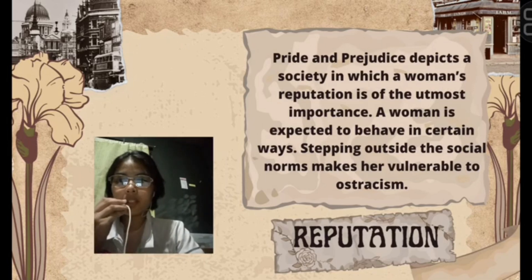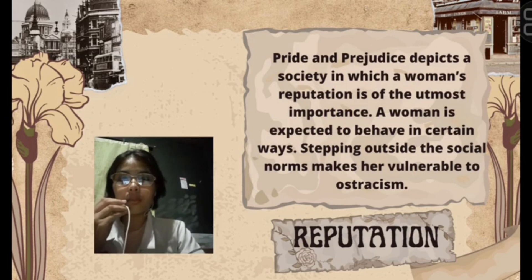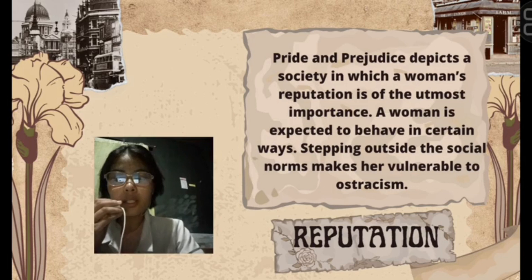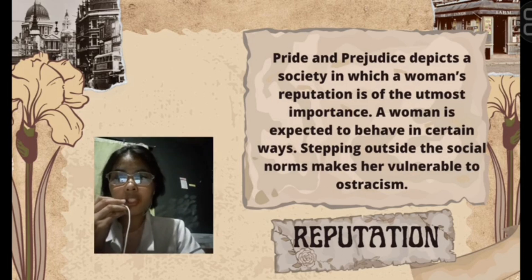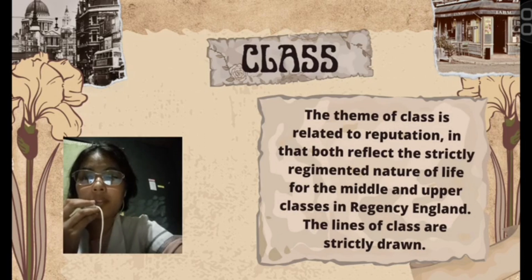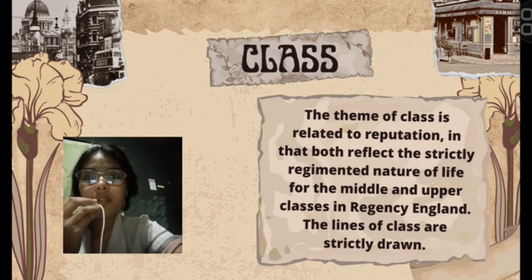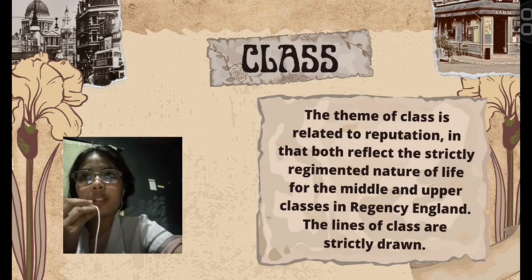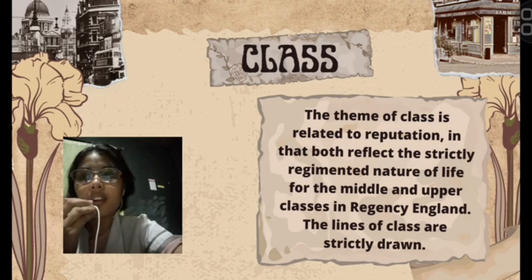For the next theme, reputation — Pride and Prejudice depicts a society in which a woman's reputation is of the utmost importance. A woman is expected to behave in certain ways, and stepping outside social norms makes her vulnerable to ostracism, meaning deliberately exclusionary treatment. For the next theme, class — the theme of class is related to reputation in that both reflect the strictly regimented nature of life for the middle and upper classes in Regency England. The lines of class are strictly drawn, as shown in the novel where the middle-class Bennets may socialize with the upper-class Bingleys and Darcys but are clearly treated as social inferiors.